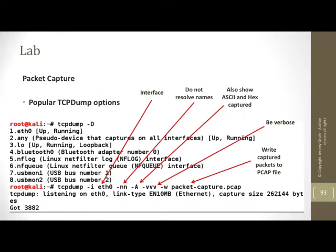To actually capture packets, there are a few helpful options. The -i flag lets you pick which network card to listen on. By default it listens on all network interfaces at the same time, which will capture traffic, but it could end up making the pcap have a lot of extra packets that you don't want. So you want to try to narrow the capture scope down as much as you can.